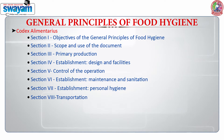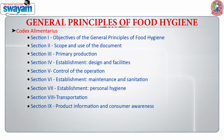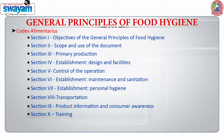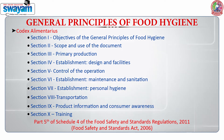Food should not get contaminated and become unsafe until it reaches the consumer. Section 9 is on product information and consumer awareness. The last section, section 10, is based on training — because whenever we talk about hygienic principles, we need to train people, change their mindset, and tell them to adopt these practices. As per the latest Food Safety and Standards regulation of India, this part has been adopted under Part 5 of Schedule 4.